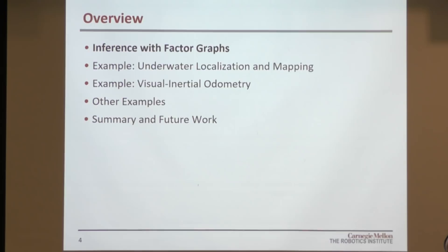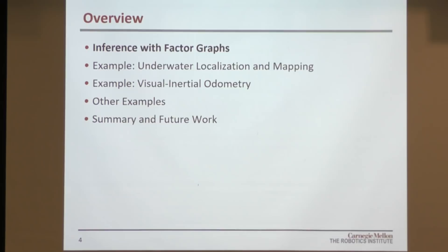In this talk, I'll start with an overview of inference algorithms for factor graphs — only at a high level, with references for further details. The main part will cover two different examples of factor graph applications: first, localization and mapping for underwater robotics, and second, state estimation for aerial robots, specifically visual-inertial odometry. As time allows, I'll also run through a few other examples before concluding.